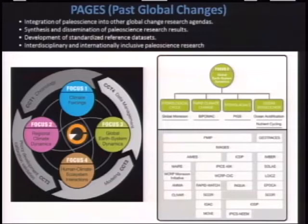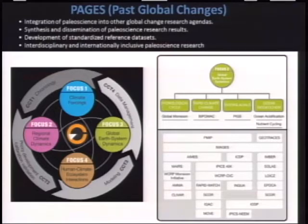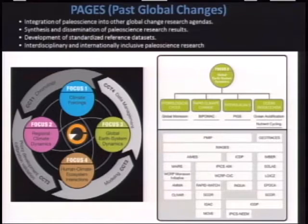You can get the full science plan on the web. What I took from it is a summary of how we organized our implementation strategy, because it's fine to have these science foci but you need implementation to get things going. As an example from Focus Three, global Earth system dynamics, we have identified four themes: the hydrologic cycle, rapid climate change, interglacials, and ocean biogeochemistry. Important for implementation are the self-organized working groups within each of these themes, which are the groups working on progressing our science.